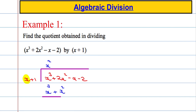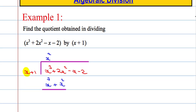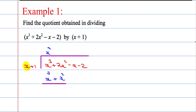We draw a line underneath and take the blue expression away from the red expression above. x cubed take away x cubed is 0, and 2x squared take away x squared is x squared. Then we take down the next part — this negative x.